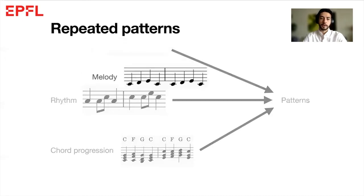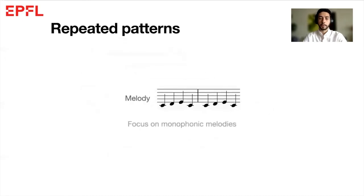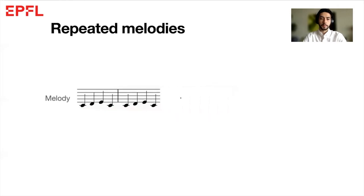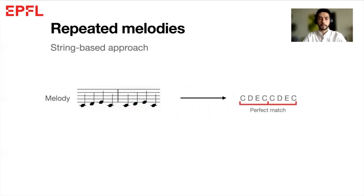But today we will focus on monophonic melodies. In the case of the first two bars of Frère Jacques, a pattern could be the first four notes. But how do we make a computer discover them?